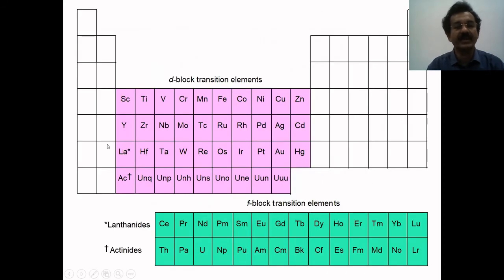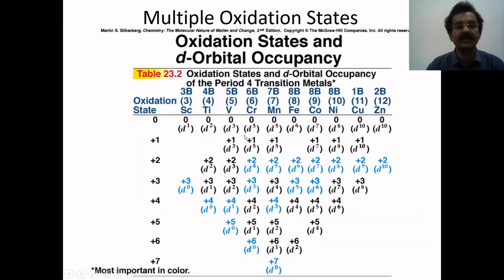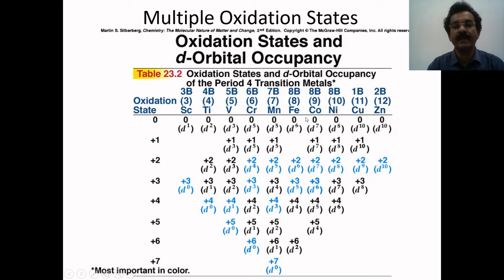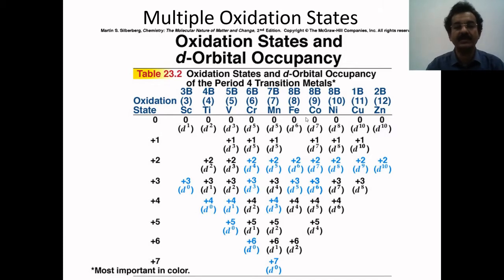Looking at the periodic table, there are 3d, 4d, and 5d series elements as well as the lanthanides and actinides. These are very important elements as far as the formation of complex compounds is concerned. Formation of complex compounds takes place because of three properties: number 1, transition elements exhibit a variety of valences — variable valences; number 2, atomic and ionic size is very small; and number 3, orbitals are incompletely filled.